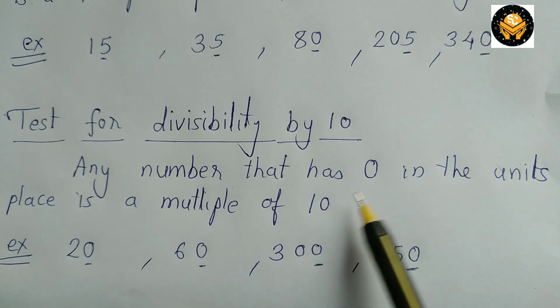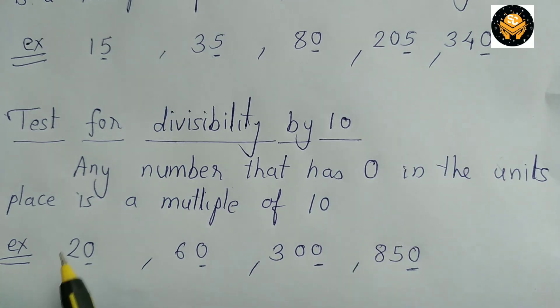Now let's see divisibility test for 10. Any number that has 0 in the unit place is a multiple of 10. Take for example 20, 60, 300, 850. Here in the unit place the number is 0. So these numbers are divisible by 10 and also are multiples of 10. Thank you.